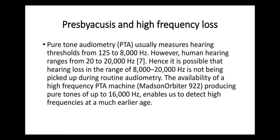Presbyacusis and high frequency loss. A pure tone audiogram usually measures hearing threshold from 125 to 8000 hertz, showing a ski slope pattern to the right indicating high frequency loss. However, human hearing ranges from 20 to 20,000 hertz. Hearing loss in the range of 8000 to 20,000 hertz is not picked up during routine audiometry because most machines do not have this capacity. The availability of a high-frequency PTA machine producing pure tones of up to 16,000 hertz enables us to detect high frequency loss at a much earlier age. Although we say presbyacusis, it usually starts much earlier and can be detected by assessing hearing between 8000 and 20,000 hertz.